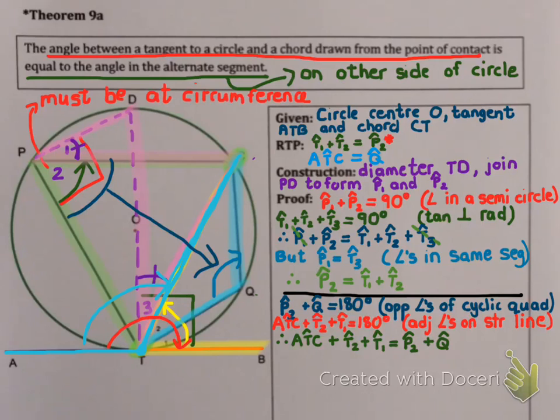In our green line, what I've said is P2 and Q must equal ATC and T2 and T1. Because both what I wrote in blue and what I wrote in red equals 180. So they must equal each other. But, as I've said,